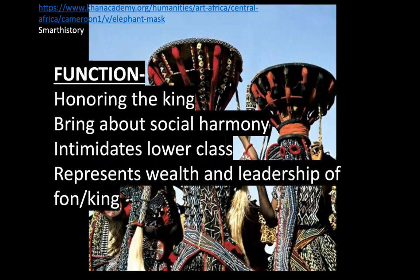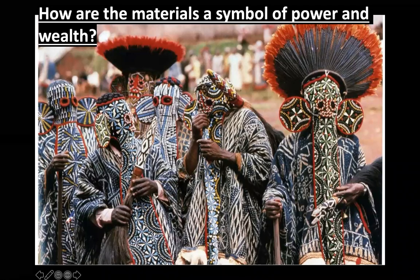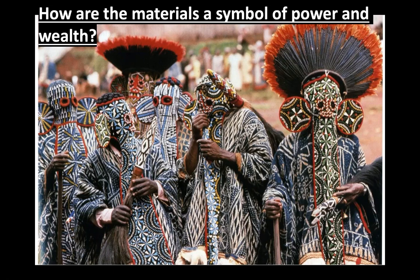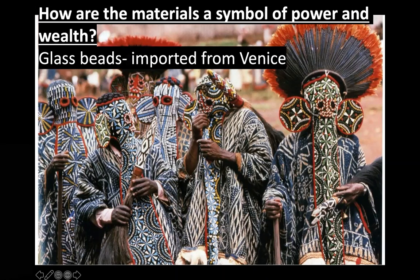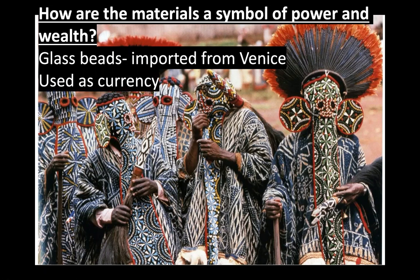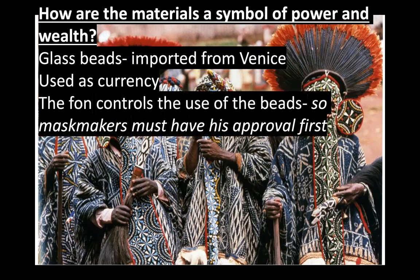Overall, this represents the wealth and leadership of the fawn. Looking at the materials — how can materials be a symbol of power and wealth? The feather headdress relates to the Pacific Ahu'ula cape or the Aztec feather headdress. The beads relate back to the bandolier bag from the Indigenous American unit. Glass beads are imported — brought in from Venice — and actually used as currency. Imagine making a full costume for this upper-class society out of money and parading it around; that exudes power. The king controlled the use of these beads, so you needed permission to use them.